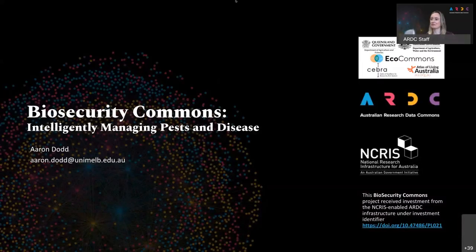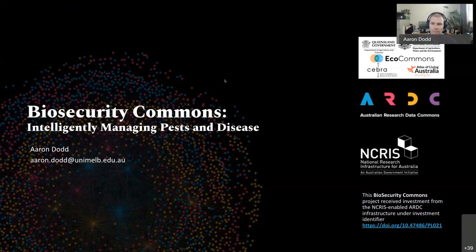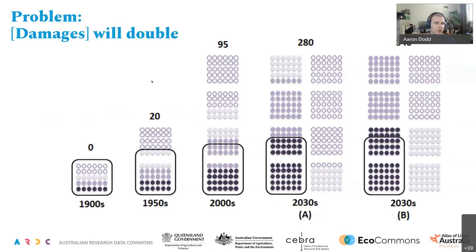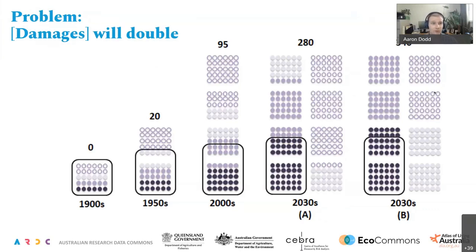Good afternoon everyone. I'm joining you today from Dja Dja Wurrung Country and going to talk about the Biosecurity Commons project on behalf of the University of Melbourne and our partners. The problem we're facing in the biosecurity sector is that the system in Australia is facing somewhat of an existential crisis. Between now and 2030, passenger and import volumes will increase by 70%. And the estimation is that residual risk — the damages caused by the things we're trying to keep out — will double. The reason it increases at a faster rate than import volumes is that we can't increase the efficiency of the system's interventions at the same rate at which volume is increasing, which means progressively worse things slip through.